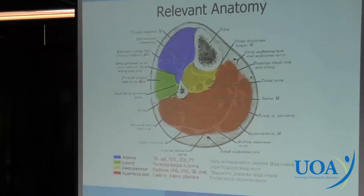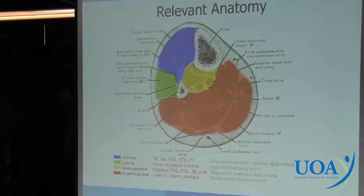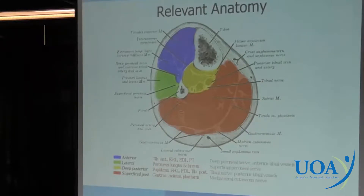Here we see the anatomy. This is going to be your anterior compartment. Here's your lateral compartment next to the fibula. This is your superficial, which is your gastroc-soleus complex. And finally, the deep compartment, which is just in between — both surgically and with the Stryker monitor, which we'll show you later.